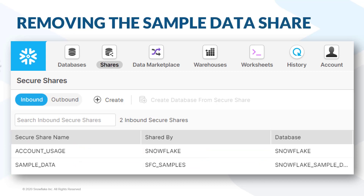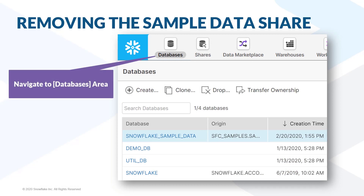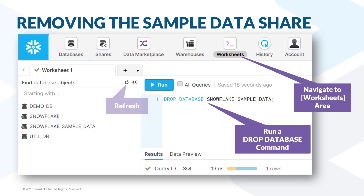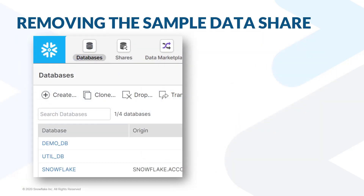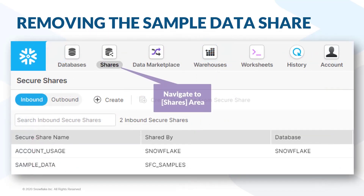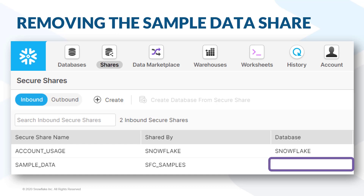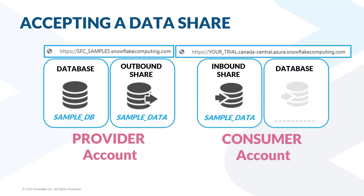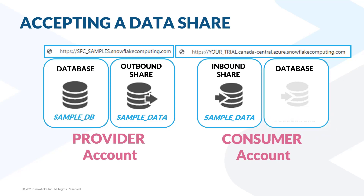After the trial period, you may decide you don't want the Snowflake sample data to appear in your account anymore. In that case, the easiest way to get rid of that database is to drop it. You can navigate to the databases area and use a drop command from there, or go into the worksheets area and run a scripted drop command. Once you drop the database, it no longer appears in the databases area or the navigation tree of the worksheets area. But if we go to the shares area, we'll see that the share is still there — only the database name on top of that share has been dropped. When the database column is empty, the share is not usable as a data source.